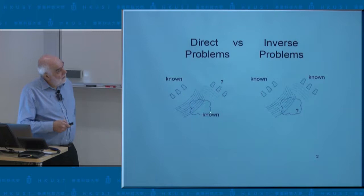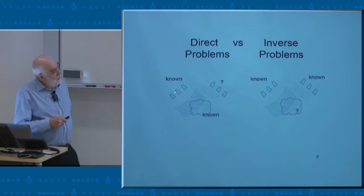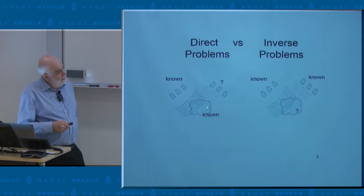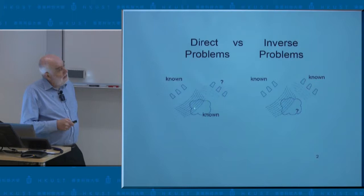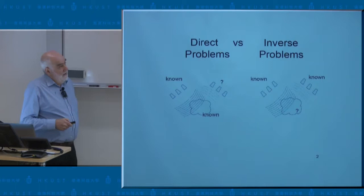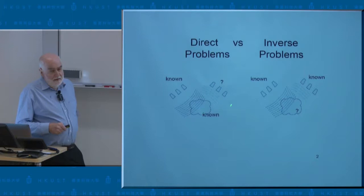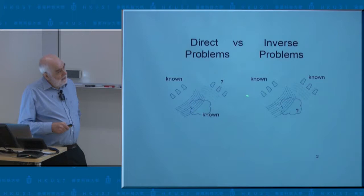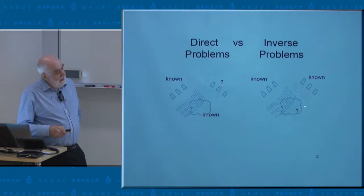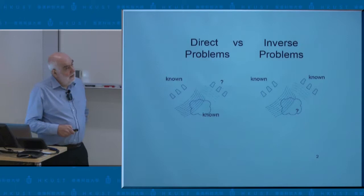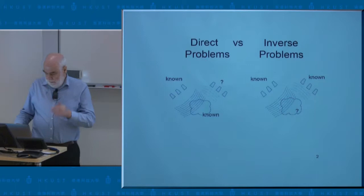Direct problems are the ones where you know a medium and waves — different types of waves, electromagnetic waves, sound waves, elastic waves, and so on. Because you know the medium, you can infer the response — you can say what is going to happen. But in many problems in science and technology, we don't actually know the medium, the parameters of the medium. So you probe the medium with waves, different types of waves again, and you measure the response. From that, you try to infer the properties of the medium that produced those measurements.